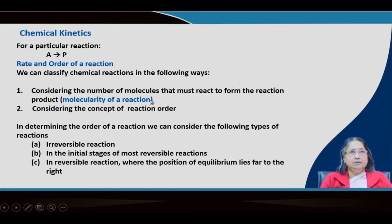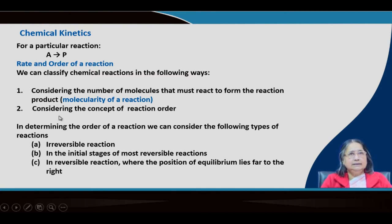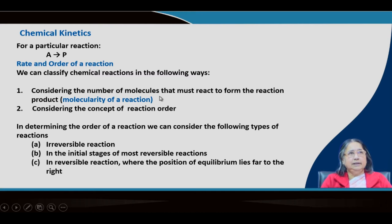The first classification is the molecularity of a reaction — that means considering the number of molecules that must react to form the reaction product. In terms of molecularity there may be a unimolecular reaction, a bimolecular reaction, or a termolecular reaction. The molecularity can be told from the balanced equation.